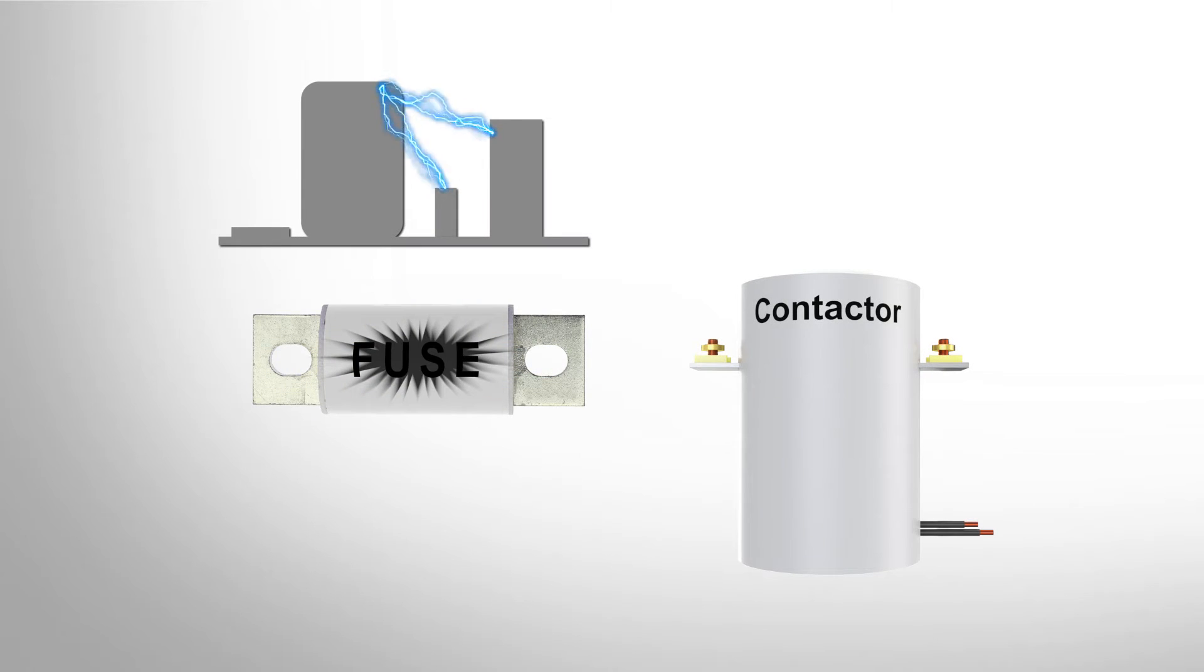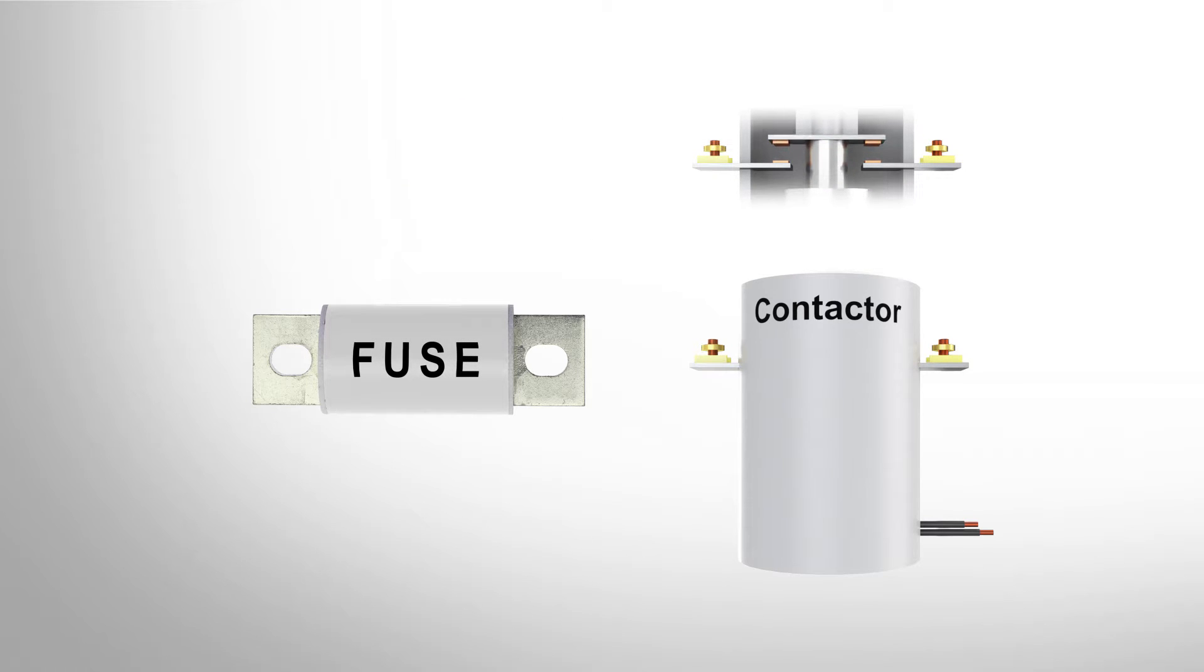Conventional EV systems rely on fuses and contactors. Fuses protect from short circuits at very high current levels, while contactors handle switching off in lower over current situations.